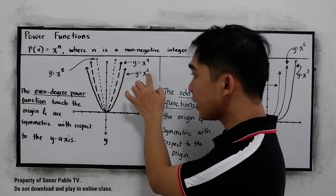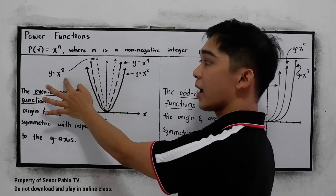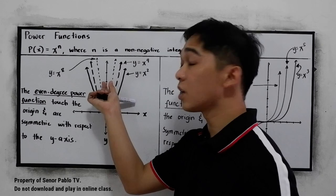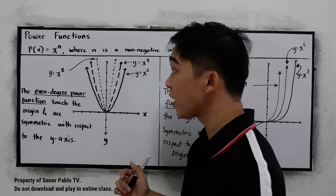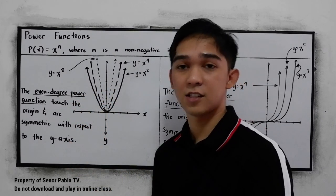So x^2, x^4, then x^8, it will go closer to the y-axis. So if we have y = x^10, it's much closer to the y-axis.